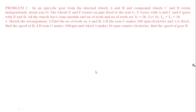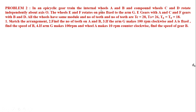We will go to the second problem. In an epicyclic gear train, the internal wheels A and B and compound wheels C and D rotate independently about axis O. Wheels E and F rotate on pins fixed to the arm G. E gears with A and C, and F gears with B and D. All wheels have the same module. Number of teeth: TC = 28, TD = 26, TE = TF = 18. First, sketch the arrangement. Second, find teeth on A and B. Third, if arm G makes 100 RPM clockwise and A is fixed, find speed of B. Fourth, if arm G makes 100 RPM and wheel A makes 10 RPM counterclockwise, find speed of gear B.